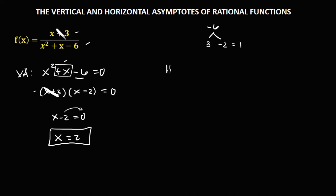For the horizontal asymptote, check the degree of the numerator, which is equal to 1, and the degree of the denominator, which is equal to 2. Since the degree of the numerator is less than the degree of the denominator, the horizontal asymptote is equal to 0. Therefore, y is equal to 0.